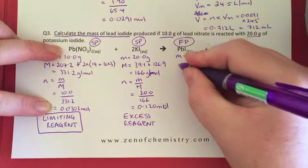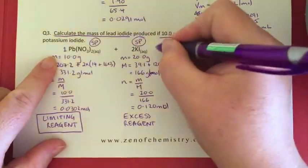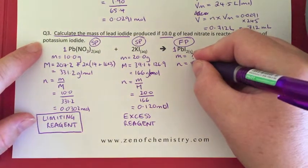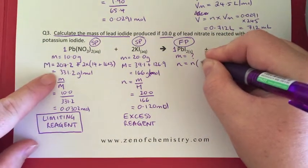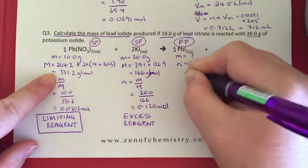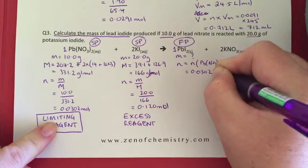Our number of moles of lead iodide, we've got a one to one ratio, so therefore the number of moles of lead iodide is equal to the number of moles of lead nitrate which is 0.0302 mole.